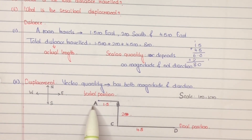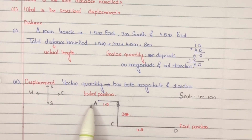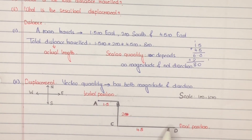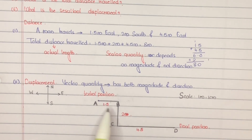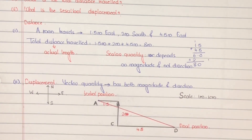The man starts at point A — initial position A — and ends at D — final position D. Displacement depends only on A and D; it does not depend upon the path A, B, C, D. Displacement is the shortest distance between the initial and final position, which is the straight line joining A and D. Join A and D and measure the length.